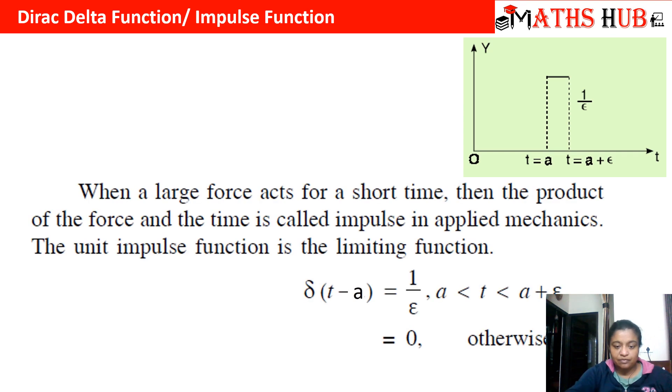This is how we develop an impulse function. An impulse function is denoted by delta t minus a. It equals 1 by epsilon when t lies between a and a plus epsilon, and it is 0 otherwise.